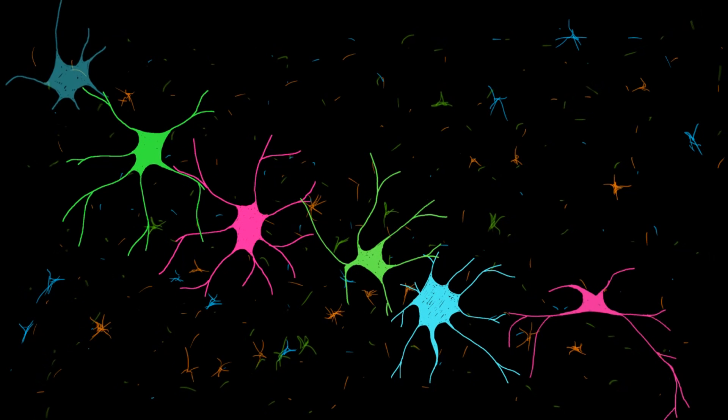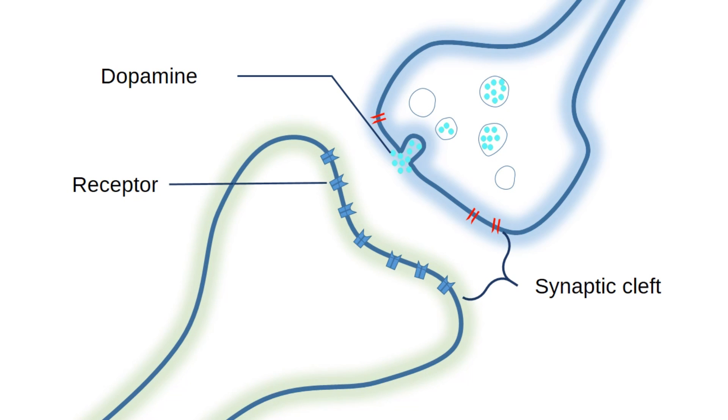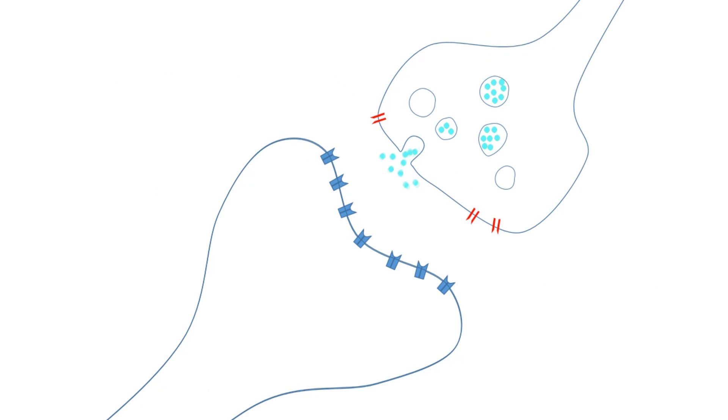Neurons use dopamine to send signals from one part of the brain to the other. It is passed from one cell through a gap called the synaptic cleft to the second cell, where it binds with a receptor. This helps create the signal in the second cell, which then passes it onto the next cell, and so on and so forth.